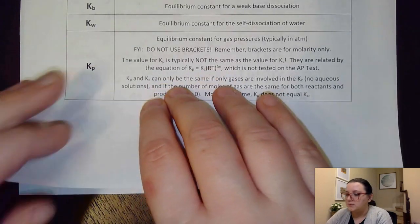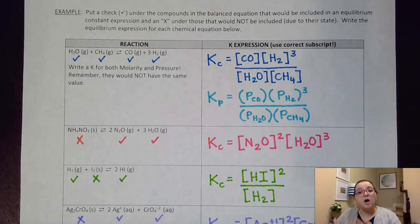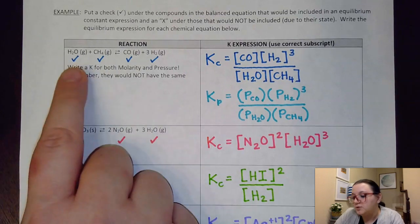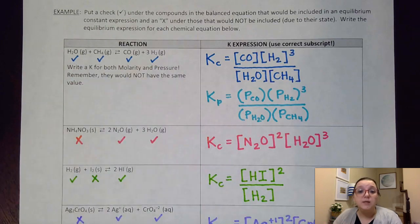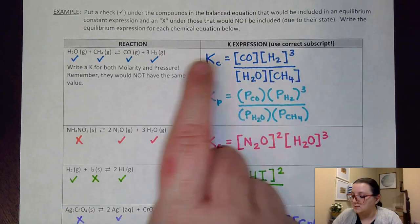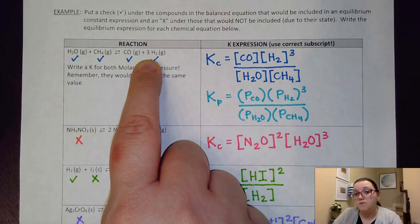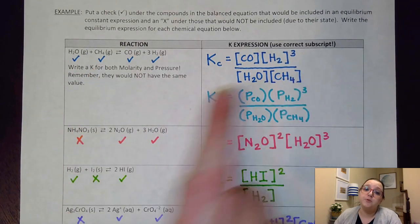So now let's look at some samples of what all of these could look like. On these reactions, the first thing they want us to do is to put a check under the compounds that would be included in an equilibrium constant expression. So that would be our gases and our aqueous solutions. But we're going to put an X under those that would not be included. So for example, solids or pure liquids. And then we are going to write the equilibrium expression for each of those chemical reactions. So to start us off here, I noticed that everything in this reversible reaction with our double arrow, meaning it reaches equilibrium, everything is a gas. And so everything would get included in our equilibrium expression.